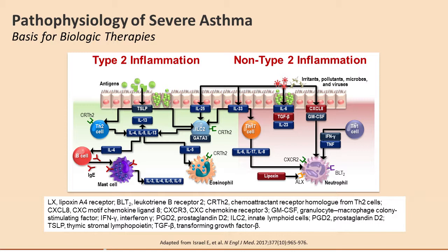The ILC2 cell can secrete IL-4, IL-5, and IL-13. So there's an integration of non-allergen, non-T2 signals mediated by the epithelium that has cross-talk to the eosinophil and IL-4, IL-5, and IL-13 signals. Also, IL-33 can modulate TH17 and affect neutrophil activity as well as trafficking.